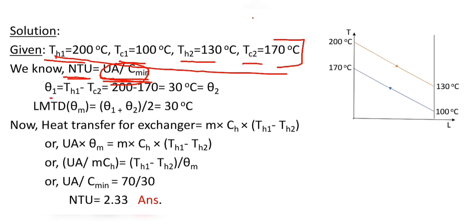The temperature difference at the inlet, ΔT1, is equal to TH1 minus TC2. TH1 is 200 degree Celsius and TC2 is 170 degree Celsius, so ΔT1 is equal to 200 minus 170, which equals 30 degree Celsius.